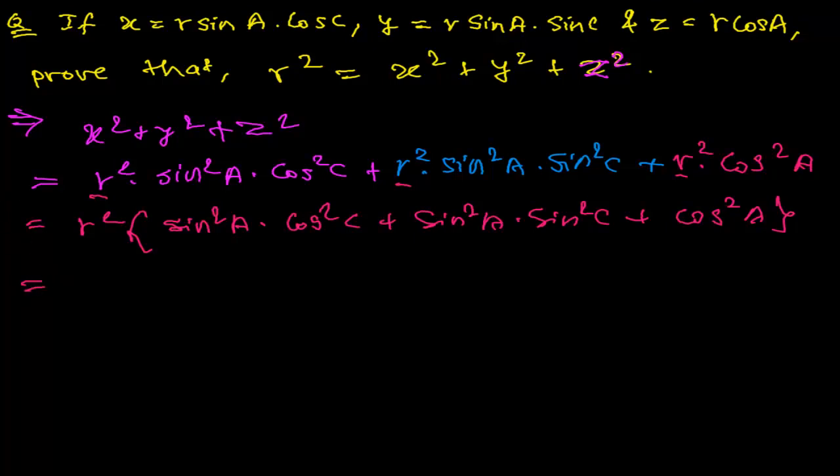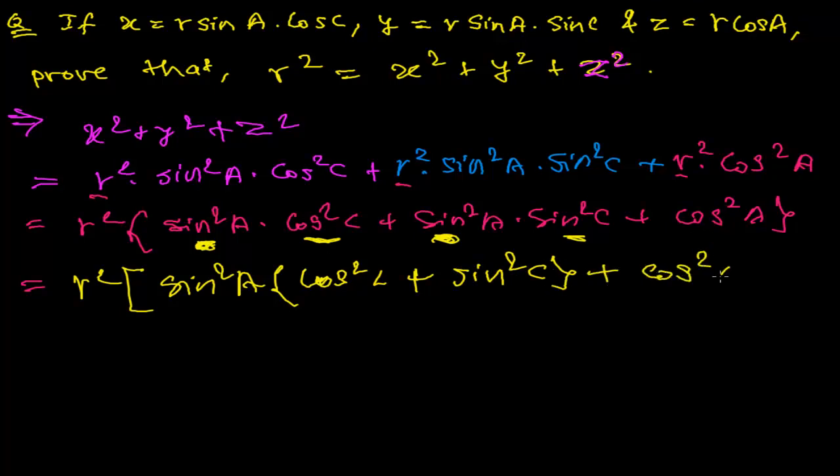So in the next level, yes, we are getting same thing here. Cos square C and sin square C. And yes, this will make something. So sin square A, sin square A, we are getting common. Yes. So what we can do? Now let's take sin square A common. This part and this part. Let's take common. So we will be getting sin square A common and we will be getting cos square C plus sin square C. Again, plus cos square A.